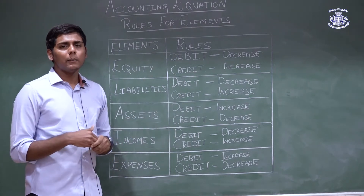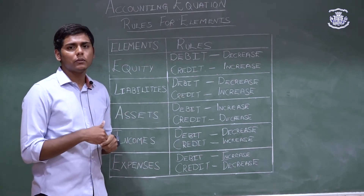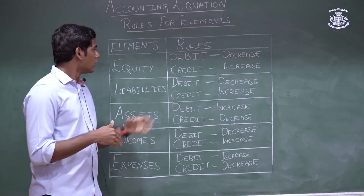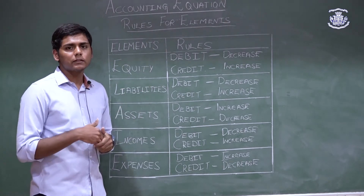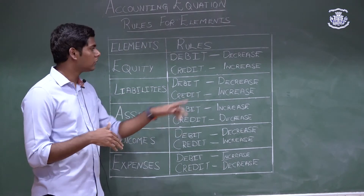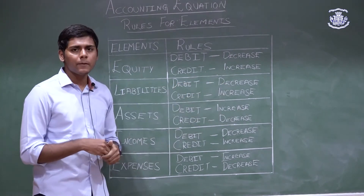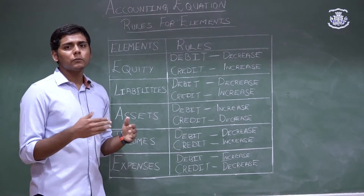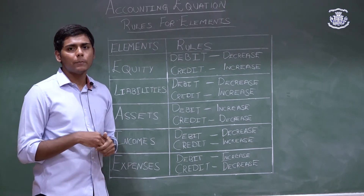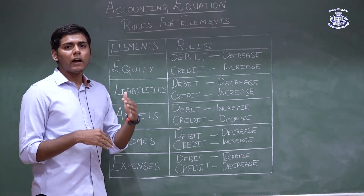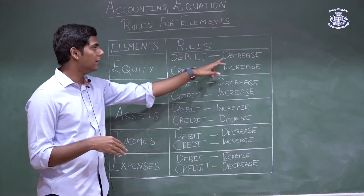For example, when an owner is introducing capital into the company, the value of equity is increasing because new capital is coming in, so we record it as a credit entry. Whereas when a partner or owner is withdrawing money from the company, the value of capital is decreasing, so we need to debit it.